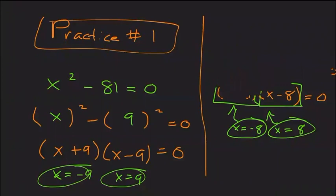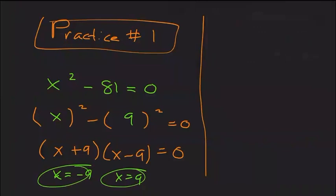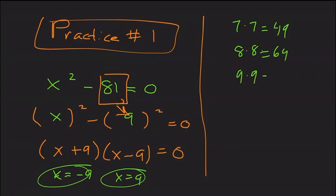One point where we might get caught is knowing how we get from 81 to 9, or from 64 to 8. These are perfect squares — you can always guess and check. 7 times 7 is 49, 8 times 8 is 64, 9 times 9 is 81. Knowing your perfect squares is very helpful for the difference of two squares method.